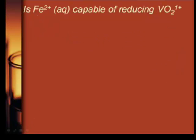So is Fe 2 positive capable of reducing VO2 one positive? Now, if this is reducing this, VO2 gets reduced, then Fe has to get oxidized. So it has to go up. And the only thing it can go up to is plus three. You've never heard of anything other than plus three that's higher than plus two for iron.